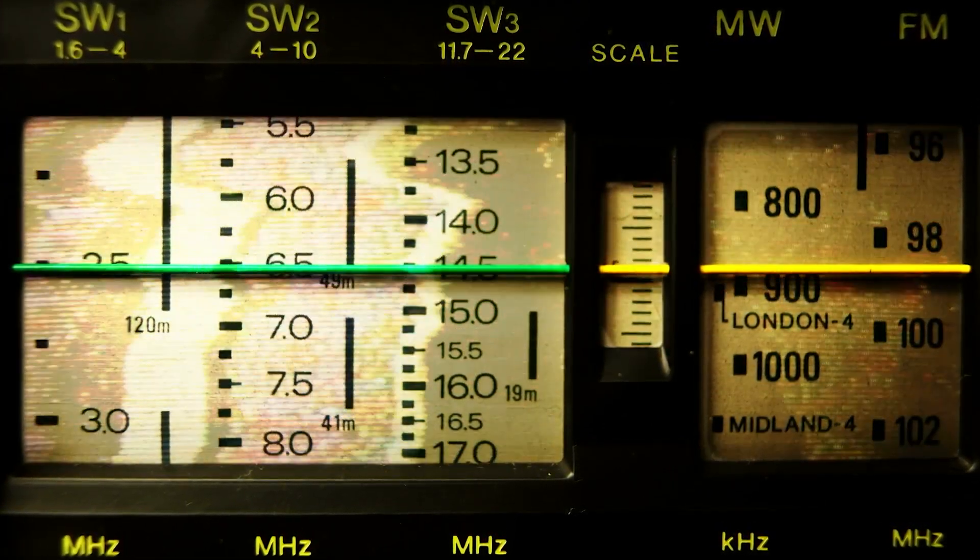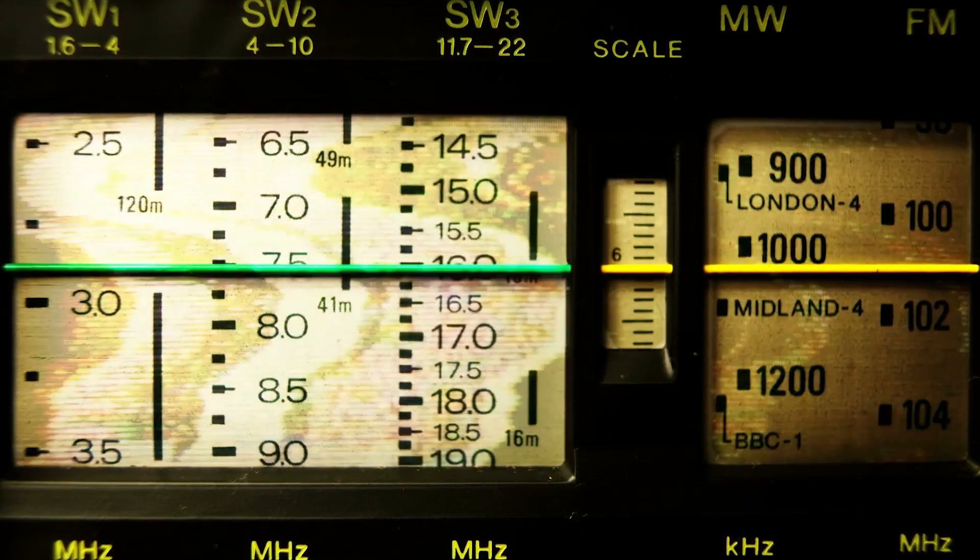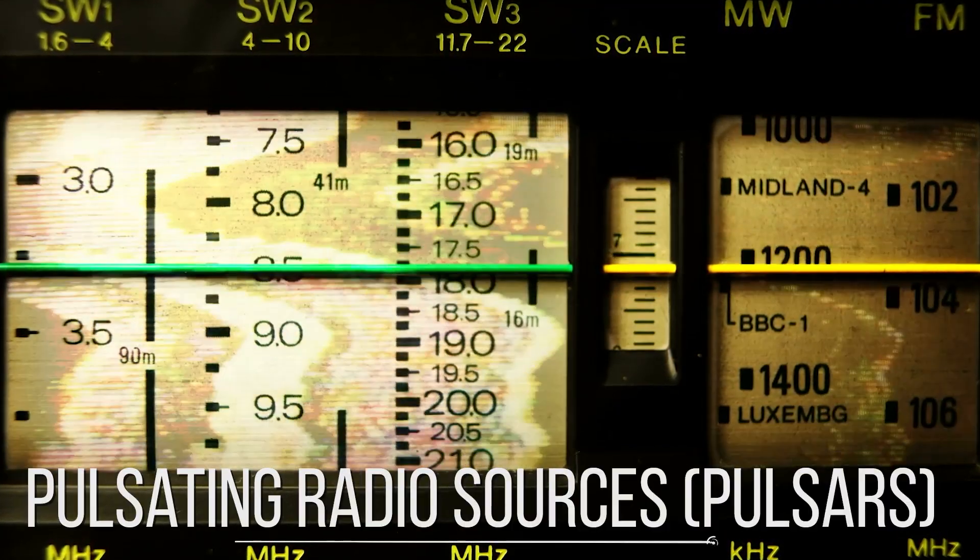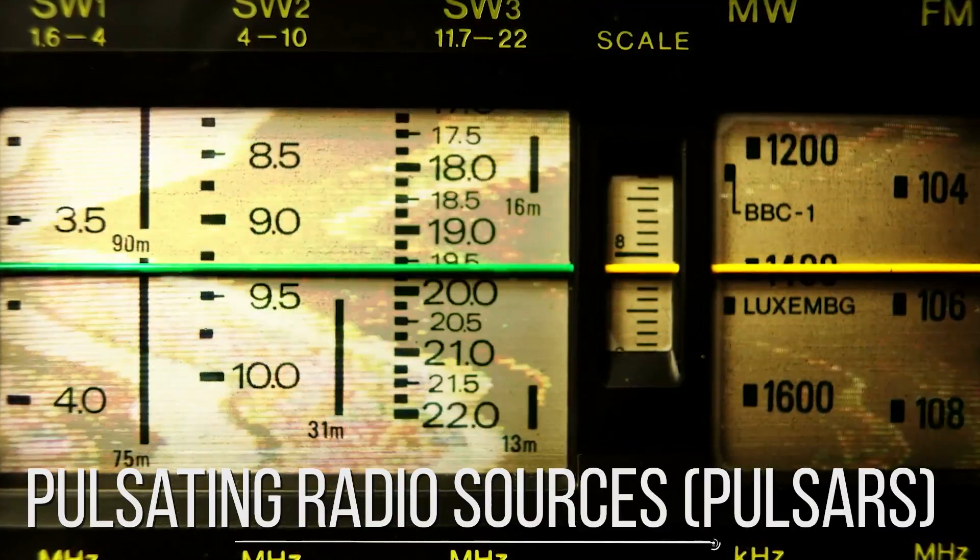By today, more than 2,500 such sources have been discovered. They are now called pulsars, short for pulsating radio sources.